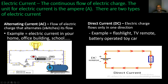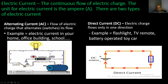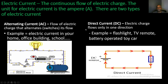First, we have alternating current, which is the flow of electric charge that alternates or switches its direction. Examples include electric current in your home, office building, and schools. As shown in the illustration, alternating current alternates or switches its flow from left to right, going back and forth — that's why we call it alternating current.